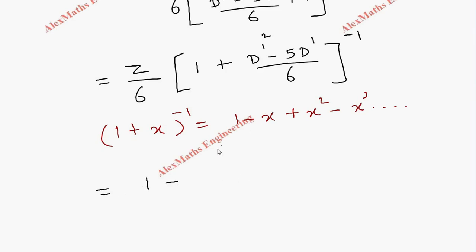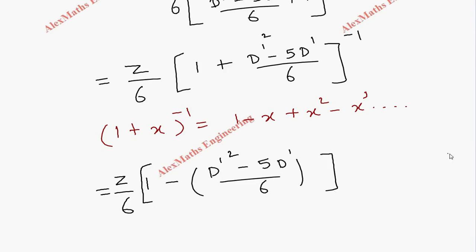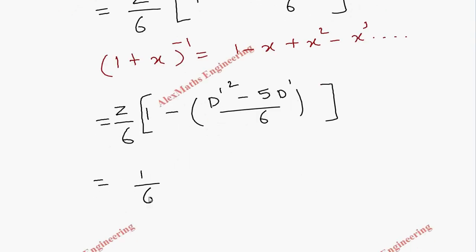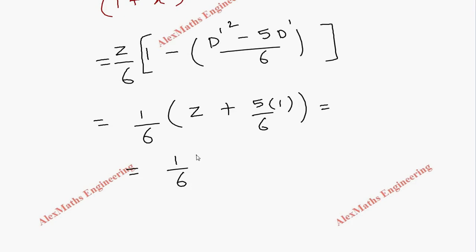So we apply 1 minus (D'² − 5D')/6 to z, multiplied by 1/6. Multiplying z by D'² gives zero (double differentiation of z), and D'·z = 1 (differentiating z once). So we get 1/6 times (z + 5/6), which gives log x divided by 6 plus 5/36.